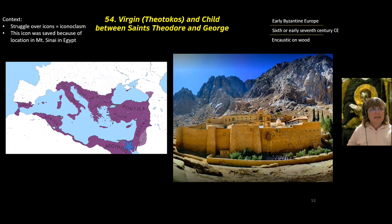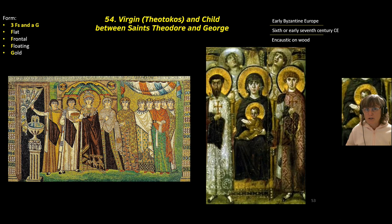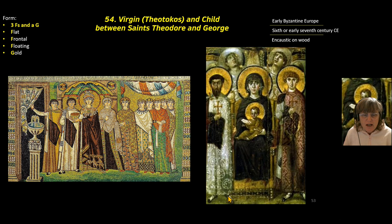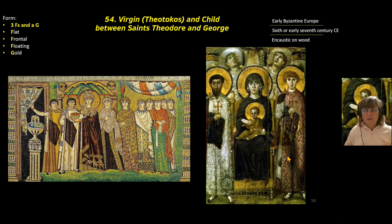It was made in the Sinai peninsula or Egypt area in this monastery, and so it's been preserved. The form of it is just like most Byzantine work: it is the three F's and a G — flat, frontal, floating, and gold. Here is Empress Theodora showing us flat, frontal, floating, and gold. You can see that Theodore and George have their feet at a 45-degree angle, so we know they're kind of floating.